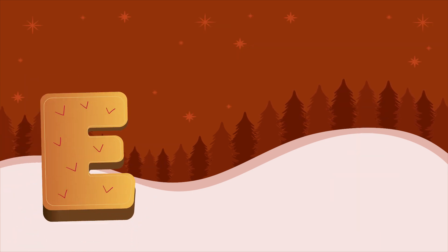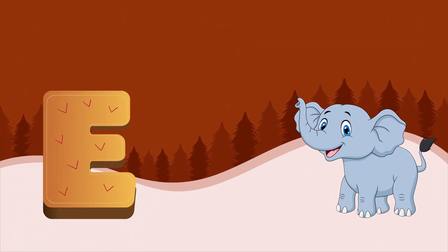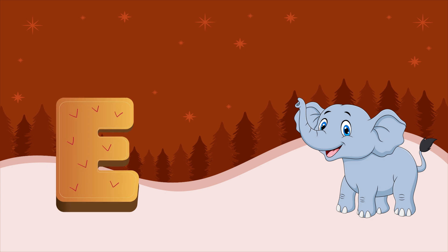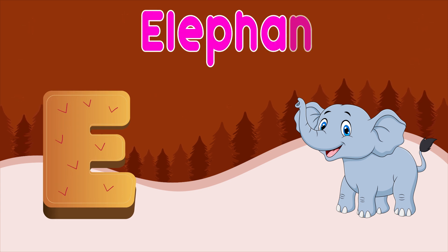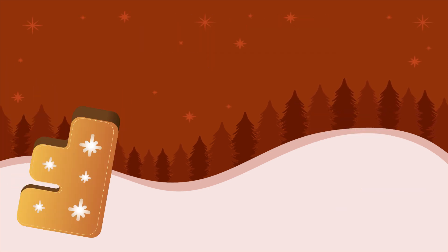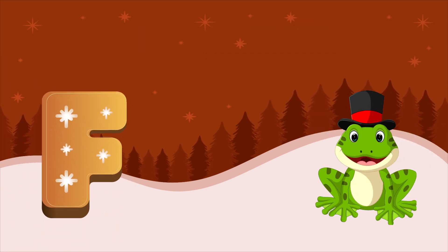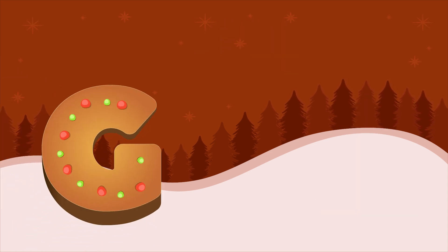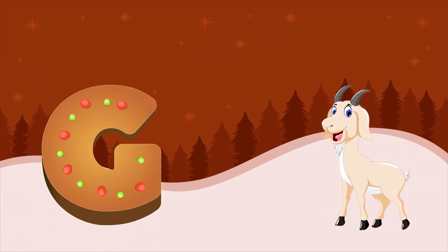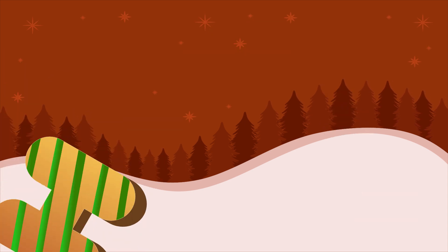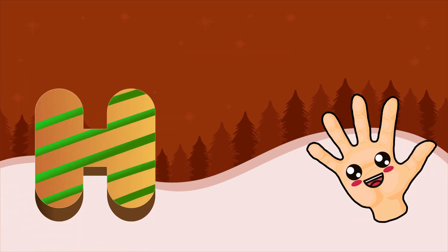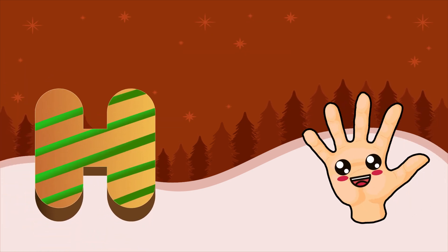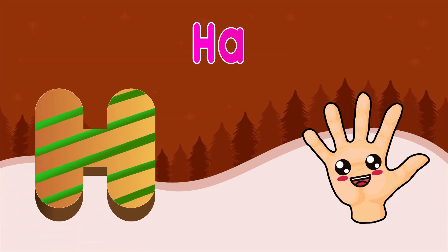E is for elephant, e-e-elephant. F is for frog, f-f-frog. G is for goat, g-g-goat. H is for hand, h-h-hand.